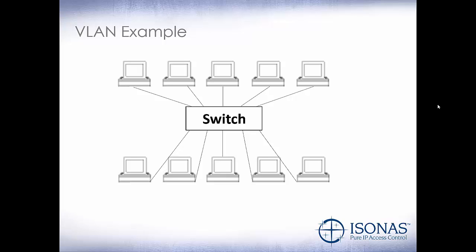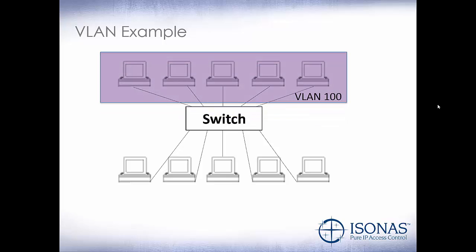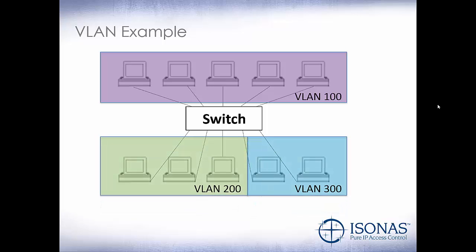Let's take a look at a VLAN example. Looking at our little network connected to a switch, we're going to put these PCs on VLAN 100, these PCs on VLAN 200, and these PCs on VLAN 300. The purple PCs are our warehouse terminals. They communicate back to a server which handles everything in the warehouse as far as shipping and receiving. We don't want that traffic on our regular workstation VLAN.